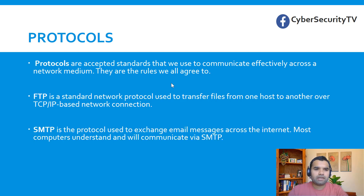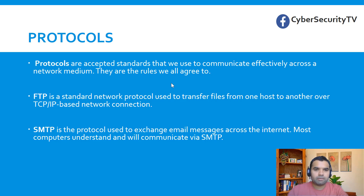The other protocol is SMTP. This is the protocol we use to exchange email messages across the internet — most computers understand and will communicate via SMTP. Anytime you want to set up a mail exchange server or configure Outlook, you'll come across SMTP. It's very important for email exchange, and we need to configure it securely. There are a lot of vulnerabilities around it, like SMTP relay, which is something to focus on.